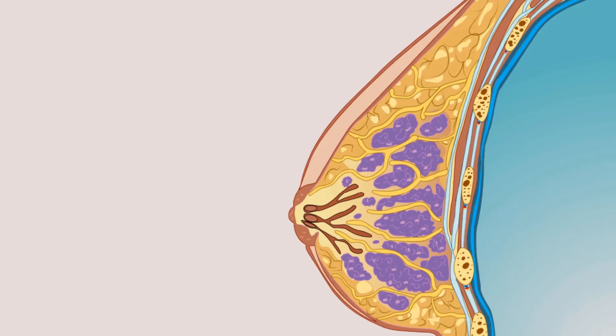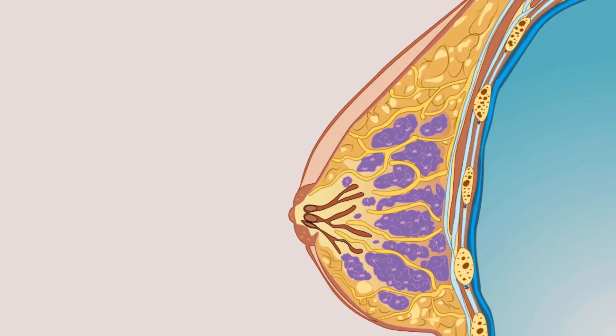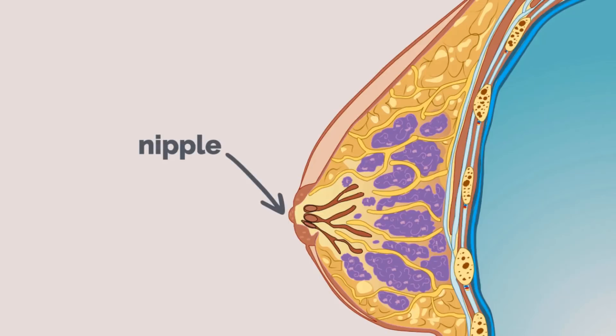The terminal ducts then drain into larger collecting ducts. Prior to the nipple, there is a dilation of the duct known as the lactiferous sinus, which then opens to the nipple. There are about six to eight openings to the nipple.